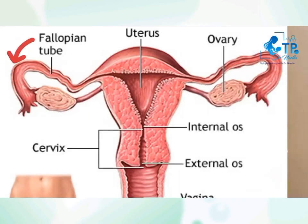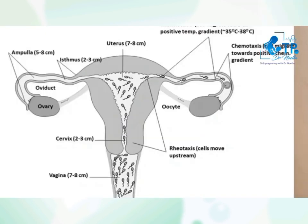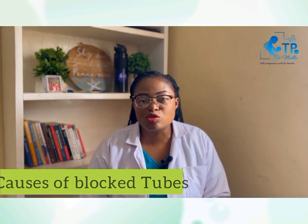What is the fallopian tube? The fallopian tube is that tiny tube that connects the womb to the ovaries. When the egg is being released from the ovaries, it passes through this tiny tube called the fallopian tube into the womb. If it is blocked, it means that the sperm and the egg are not going to meet.